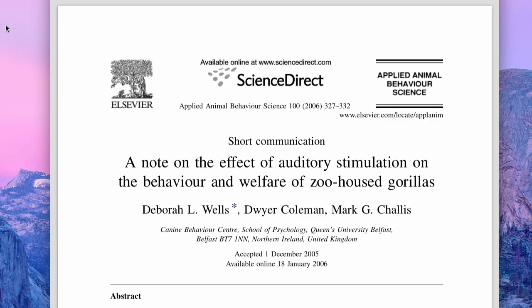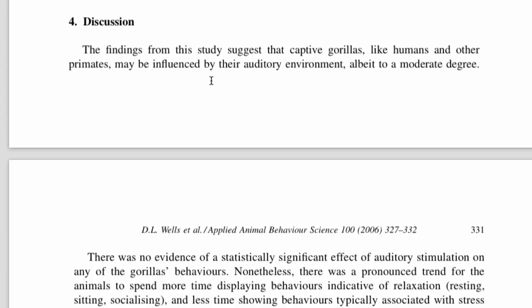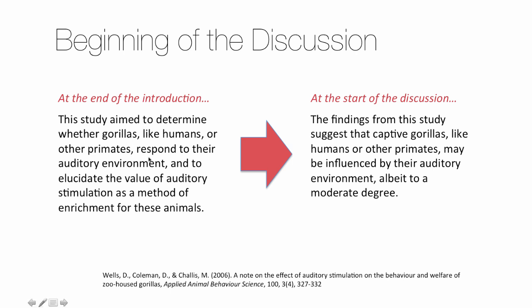Let's take a look at the discussion section of this paper on the effect of jungle sounds and classical music on the behavior of gorillas in the zoo. Here's the first paragraph. Notice how the beginning of the discussion reviews the main result. The statement of your main result at the beginning of the discussion should tie up with the statement of purpose of the study that you made at the end of the introduction. This is the last sentence of the introduction: 'This study aimed to determine whether gorillas like humans or other primates respond to their auditory environment and to elucidate the value of auditory stimulation as a method of enrichment for these animals.' And then this is the first sentence of the discussion: 'The findings from this study suggest that captive gorillas like humans or other primates may be influenced by their auditory environment, albeit to a moderate degree.'